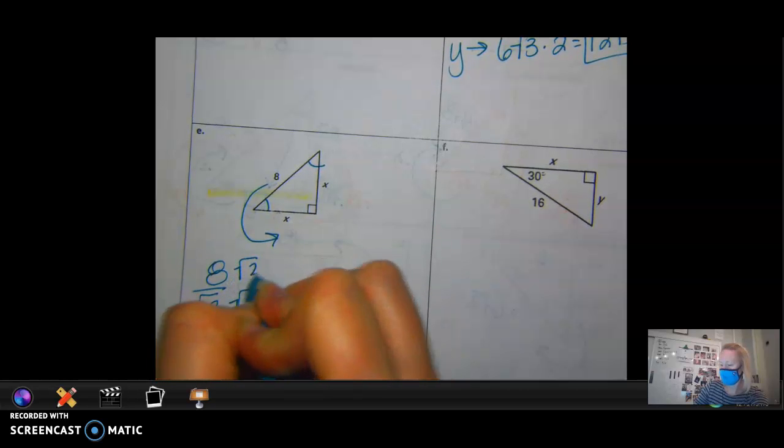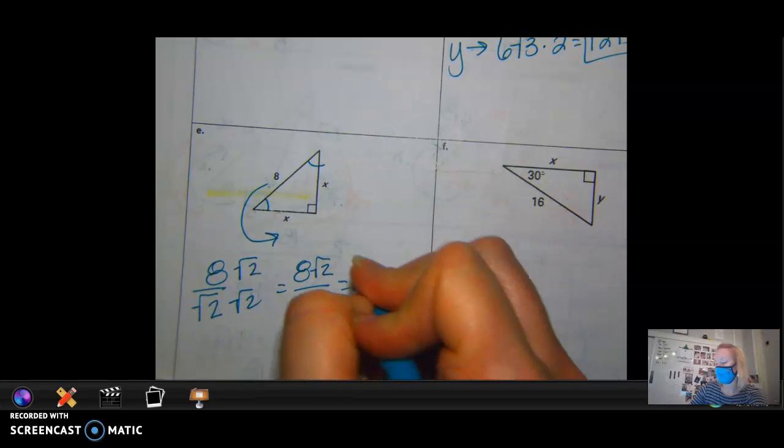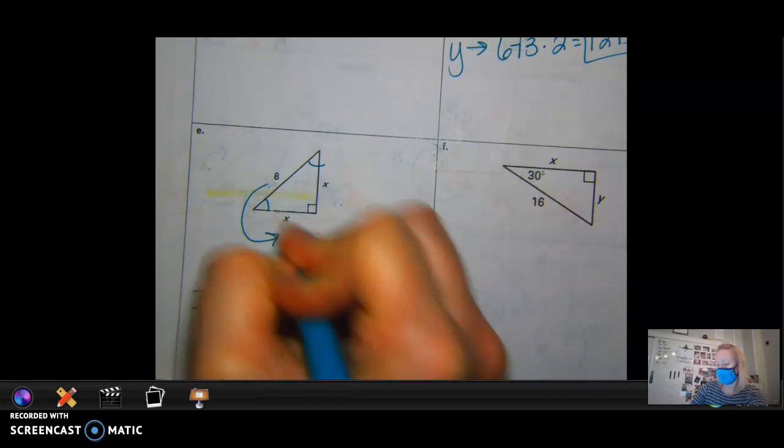Good. And then I'm going to rationalize, right? So I get 8 square roots of 2 over 2, which actually equals how much? 4 square roots of 2.